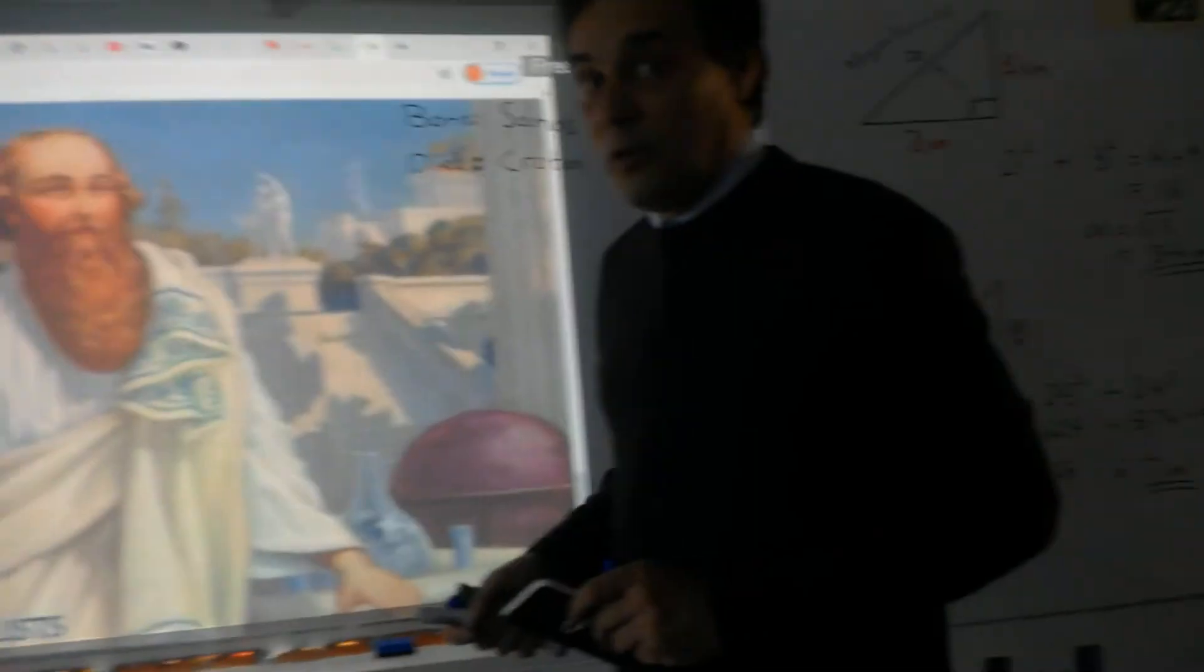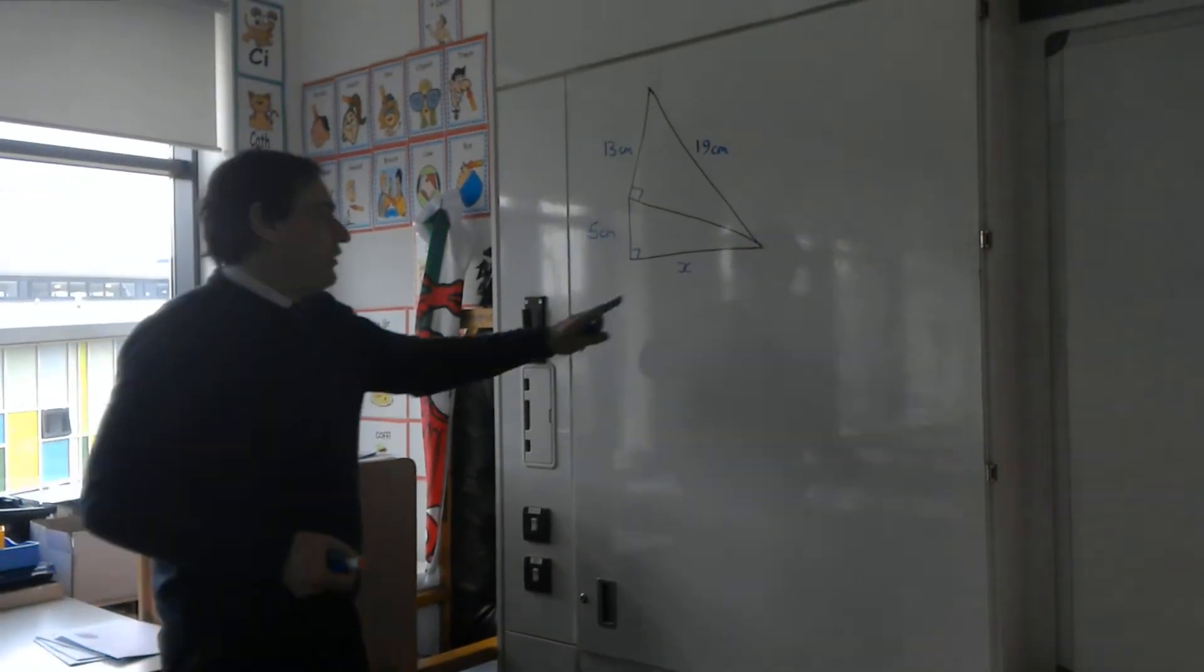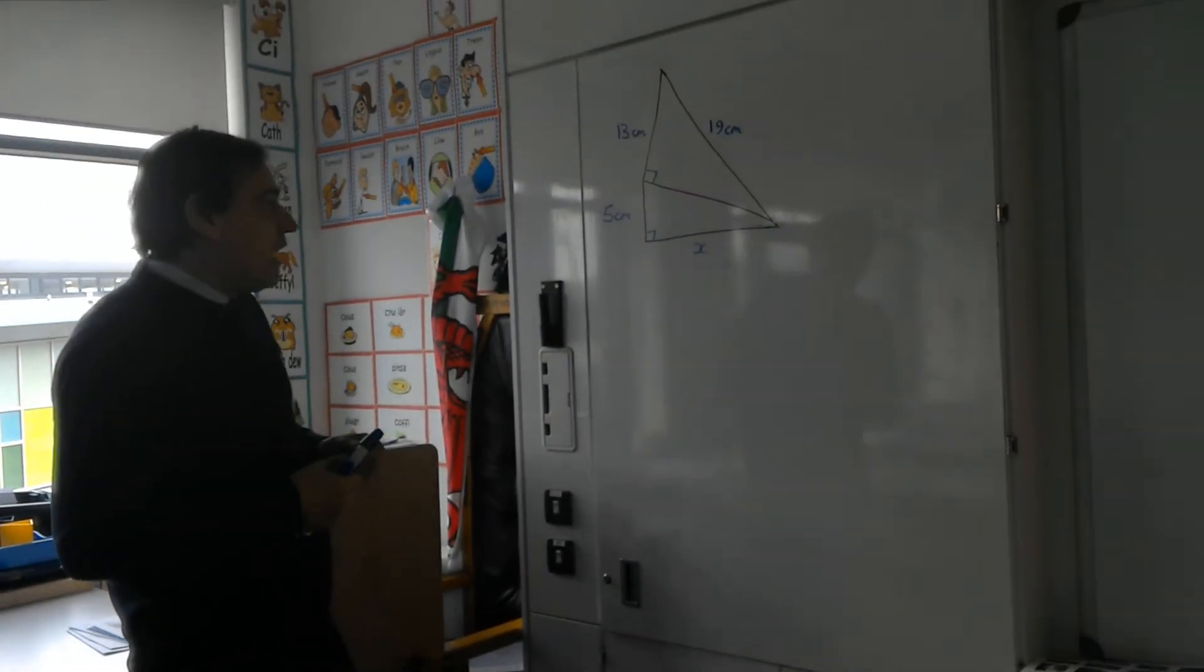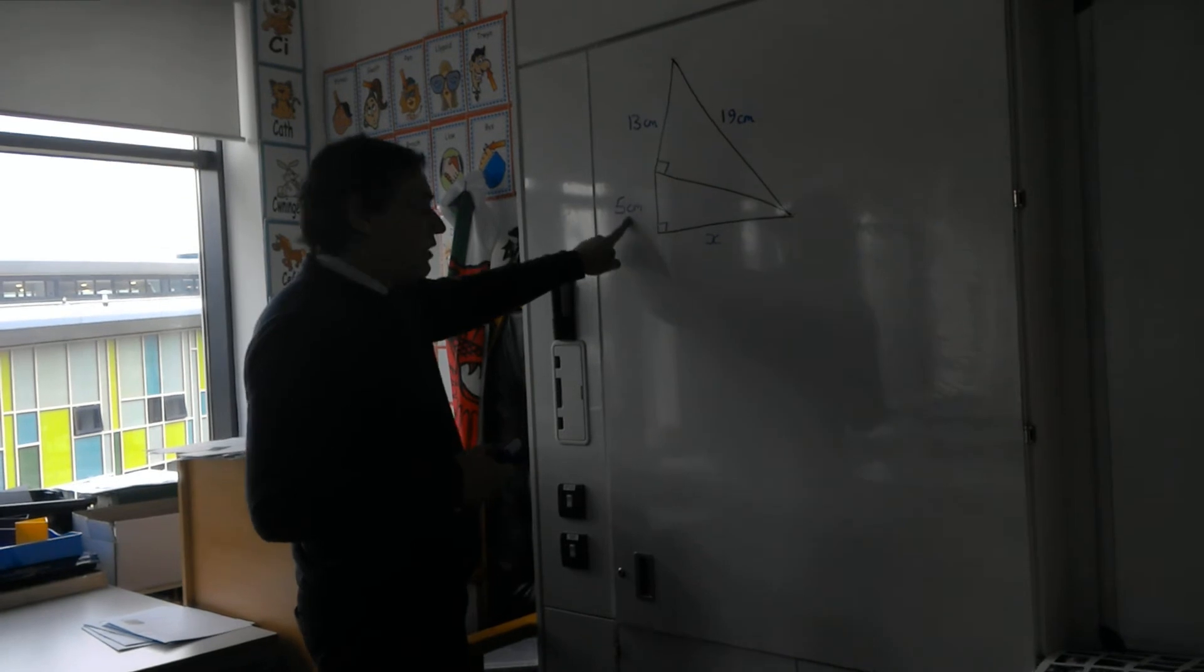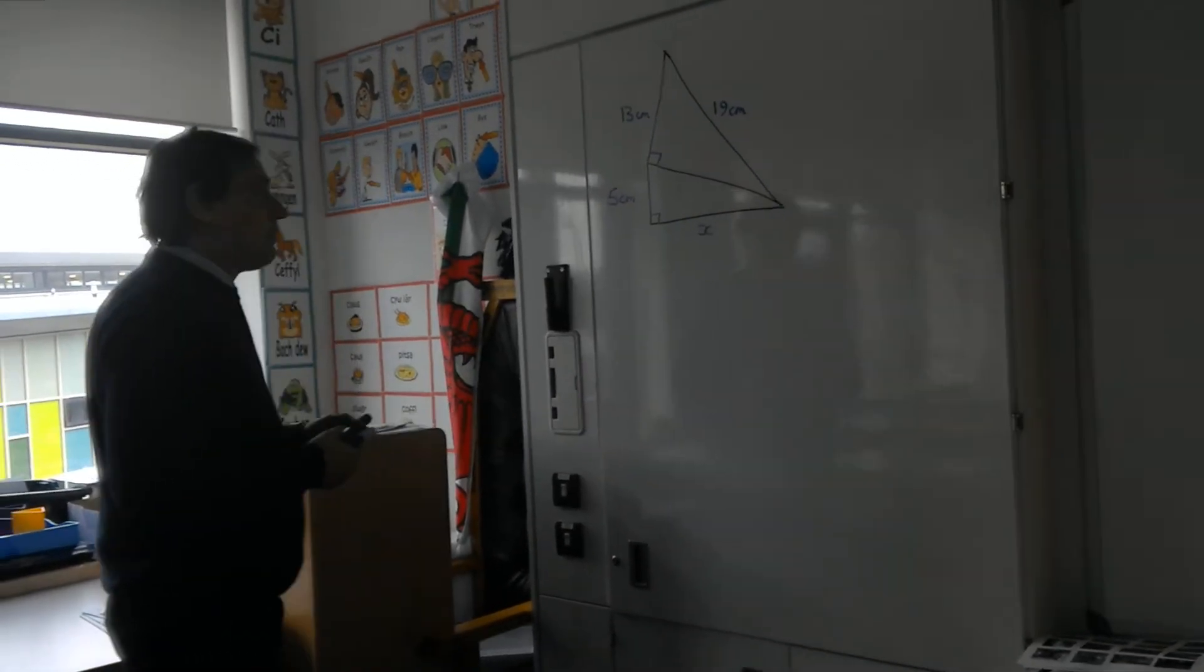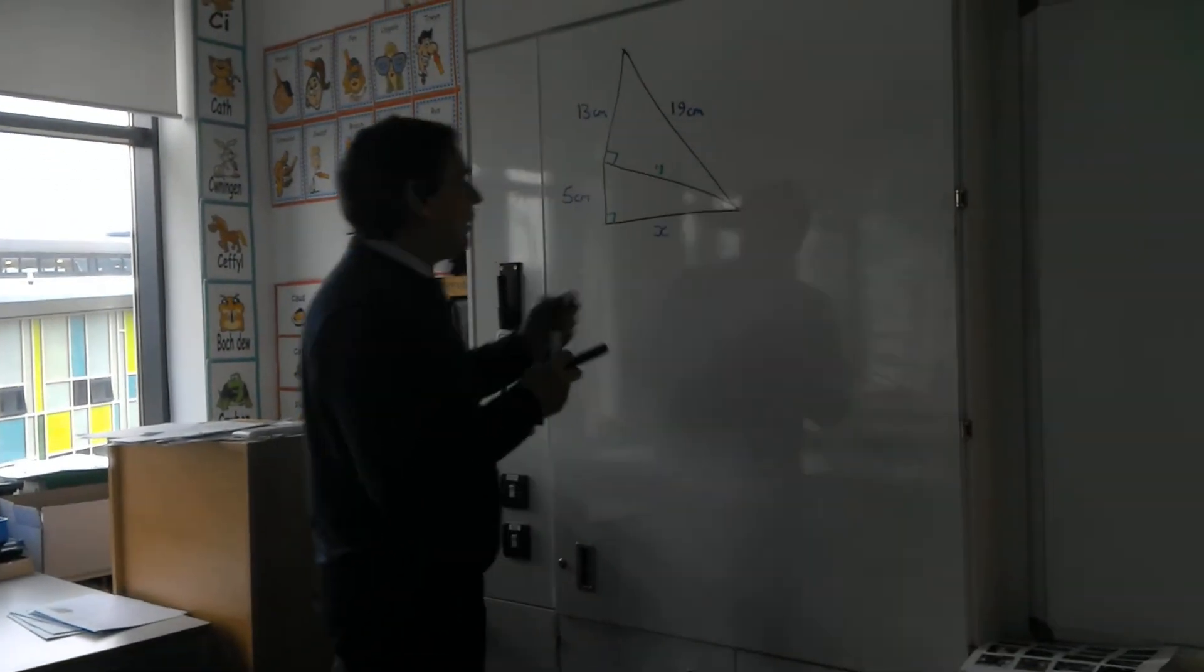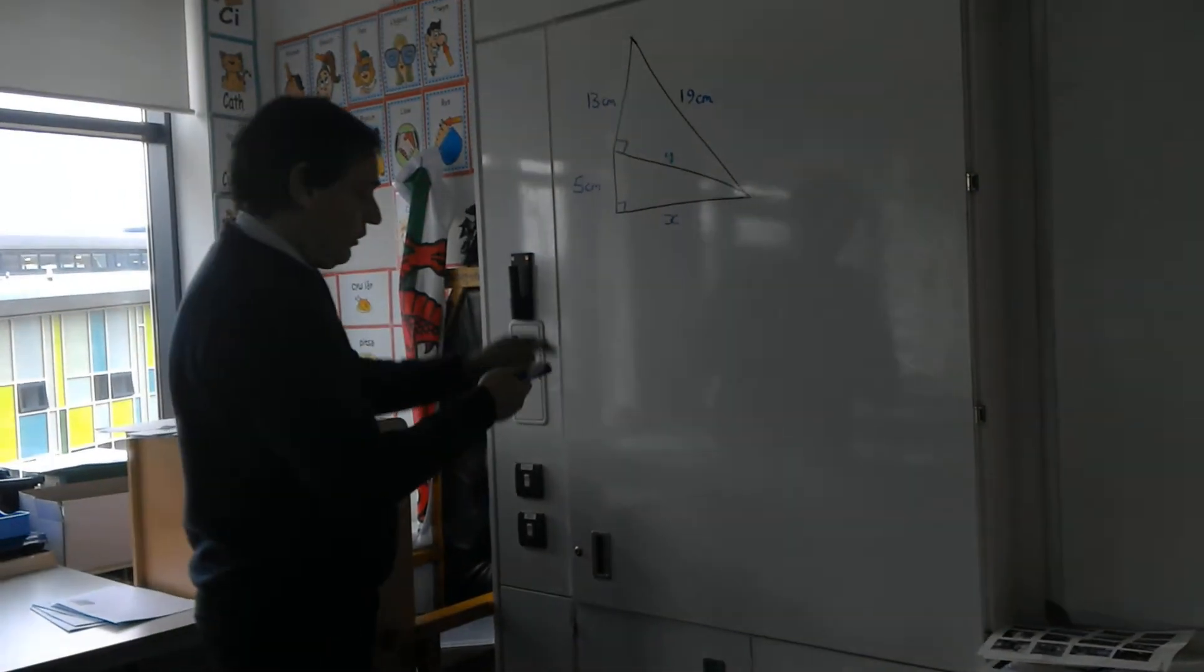So let's go over here to a more complex problem on the board over here. So here I've got to find this side x. Now I can only find the third side of the triangle using this Pythagoras if I've got two sides already. On this lower triangle here, I've only known what the 5 is. So I need to find out what that side is. So I've got to do this problem in a couple of stages. So what I'm going to do first of all, I'm going to find out this side here. I'm going to label it as y here in green. I'm going to find out what y is by using this 13 and the 19 because it forms a triangle on the top.